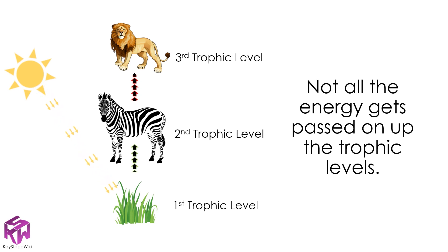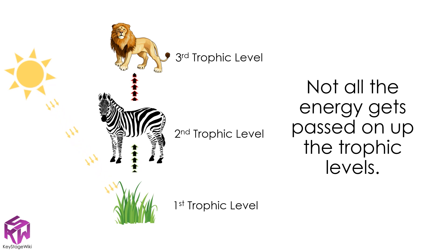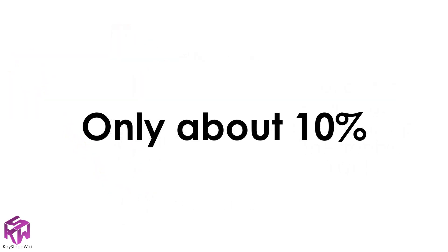However, keep in mind that the food chain only shows us the transfer of energy between organisms — it does not show us what happens to all the energy. Most of that energy is never transferred from one organism to the next; most is lost to the food chain because at each stage the organisms use that energy before passing only some of it along. In fact, only around 10% makes it to the next trophic level.